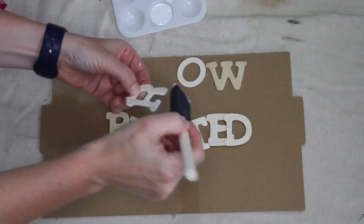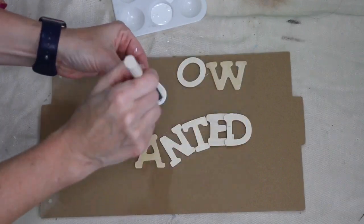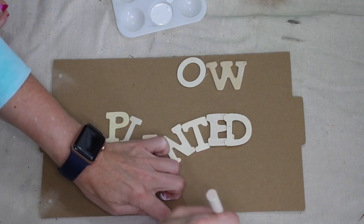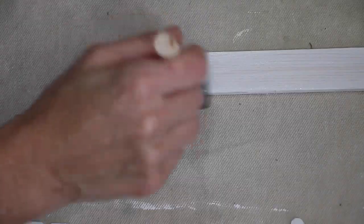But of course do whatever you want. So going in with that same white acrylic paint, I painted the words grow and planted. I also painted one paint stick that I get in a pack of 10 from Home Depot.